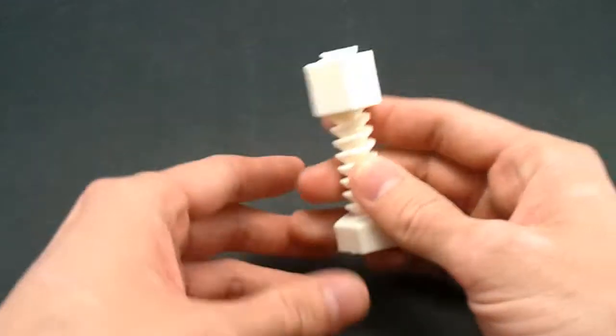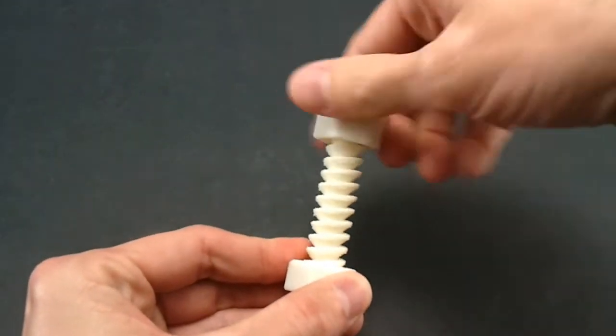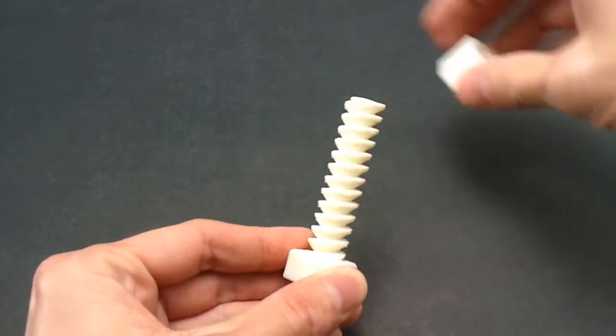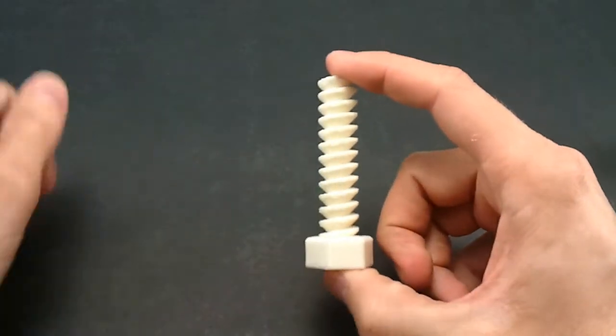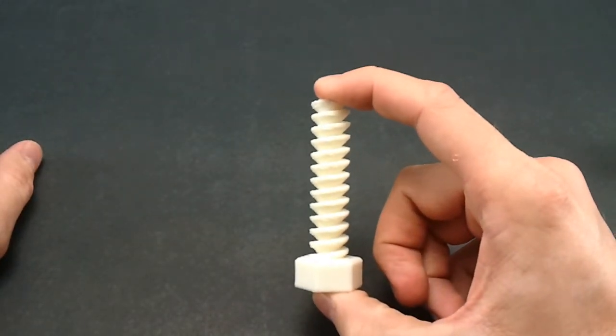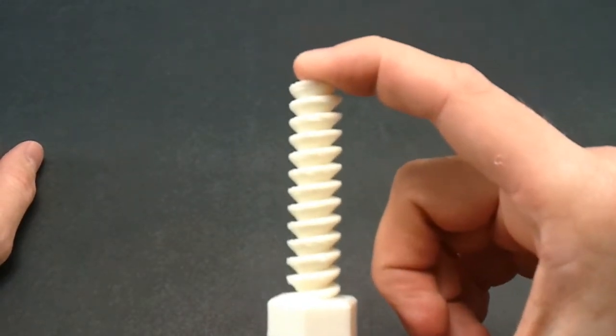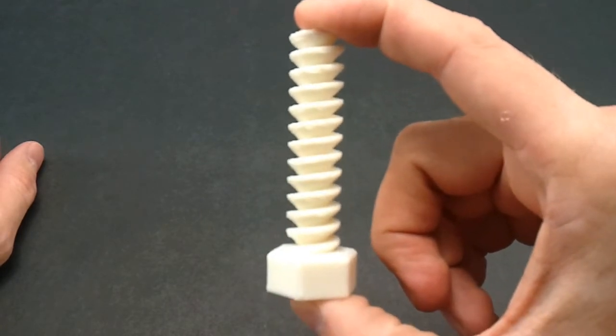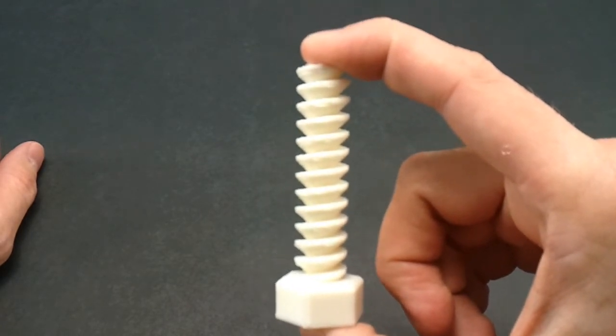Now the tricky bit about printing a screw thread is doing it without support material and the key to that is this special kind of thread profile which is known as a buttress thread.